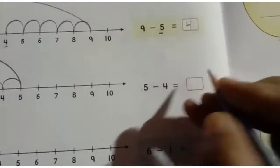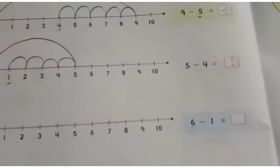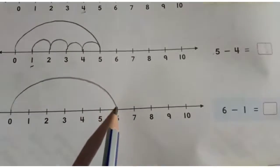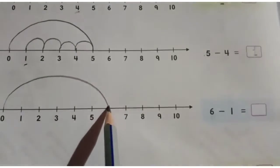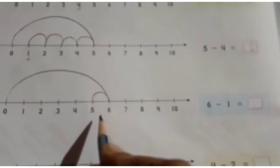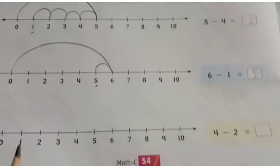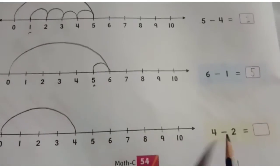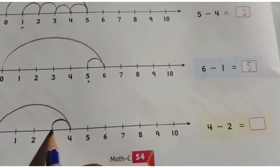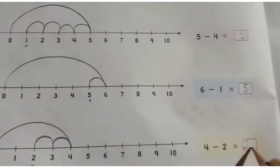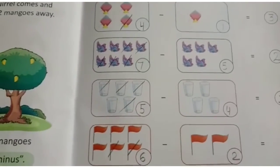Next: jump from zero to six, then come one step back — one step back — and our answer is five. The answer is five. Next: jump to four from zero, then come two steps back: one, two. The answer is two. Students, complete this work on page numbers 53 and 54, and also complete your math book page number 51. Thank you.